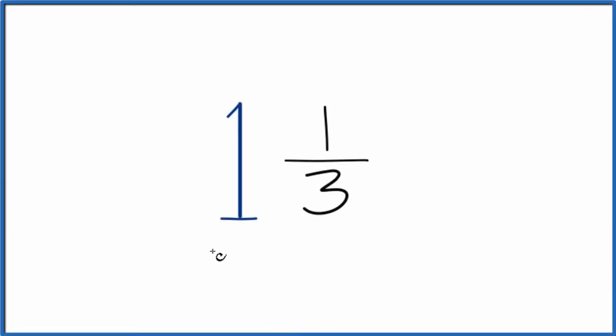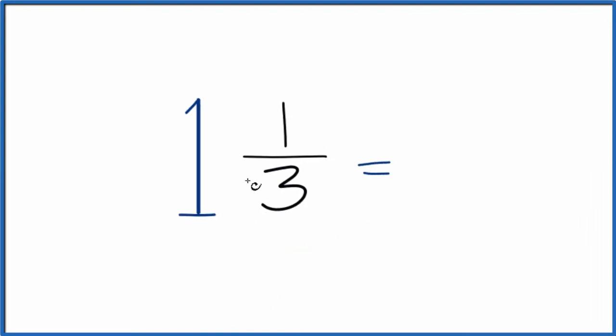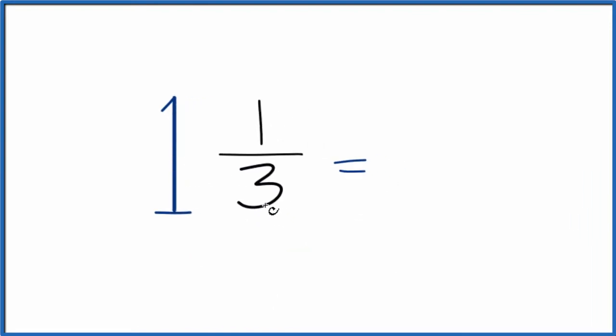In this video, we'll write the fraction 1 and 1/3 as a decimal. So we could take 1 times 3 plus 1. That would give us 4. That's our numerator. We just bring the denominator across, and we have 4/3.